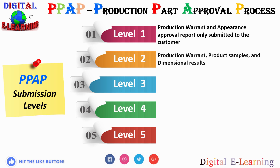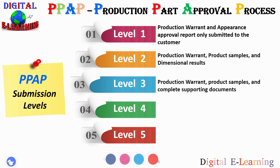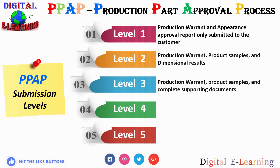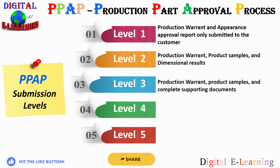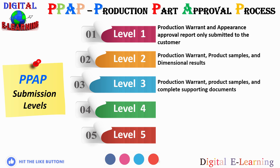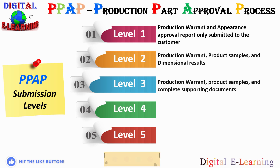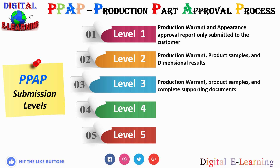Level three has production warrant, product sample, and complete supporting documents. This level is generally used for all new parts being PPAP'd for the first time and must include all the elements of quality planning including PFMEA, control plan, flow diagram, and evidence of PV testing acceptance.